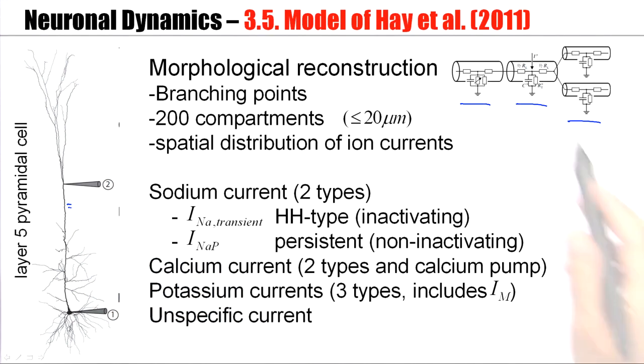Now not all segments must have the same type of ion channels. They can be active ion channels, they can be just passive ion channels, and the type of ion channels that are here at this location might be different from the location here or from the location there. There's a model of Hay et al., of such a layer 5 pyramidal cell, which includes different type of sodium currents. One is of the Hodgkin-Huxley type. It's an inactivating current. But then there's also the persistent sodium current, which is non-inactivating. There are additional calcium channels, two different types of calcium channels, and a calcium pump. There are potassium currents. Some of these depend on calcium. Others don't. And there might be also some unspecific current.